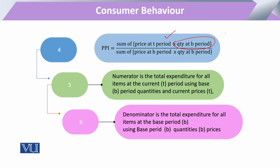In summation, the numerator is the sum of all commodity prices at time period T multiplied by their quantities at time period B. The denominator is the sum of all prices at time period B multiplied by their respective commodity quantities also at time period B. So the numerator represents total expenditure on all items at the current time period T compared to their respective base period quantities.